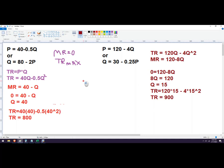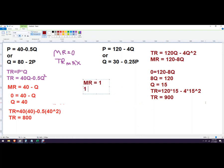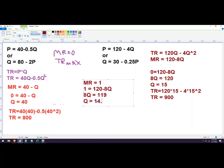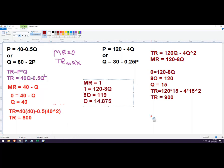Let's do MR equals 1. And we're just going to plug it in there. So we get 1 equals 120 minus 8Q. And we get 8Q is 119, Q would then be 14.875.